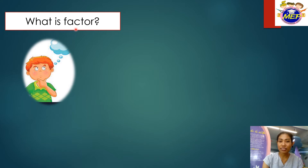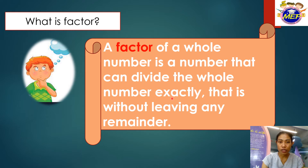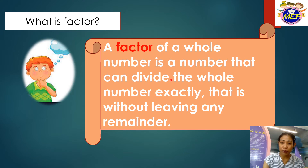So what is a factor? A factor of a whole number is a number that can divide the whole number exactly — that is, without leaving any remainder. So class, a factor is a whole number that when you divide a number, there is no remainder left.